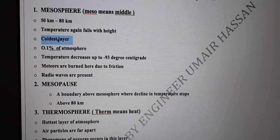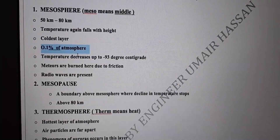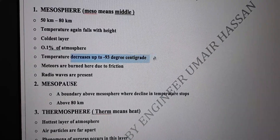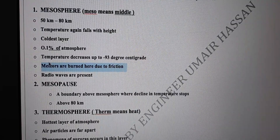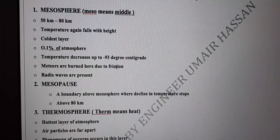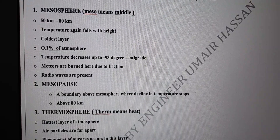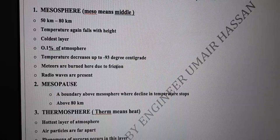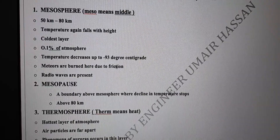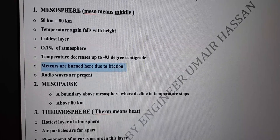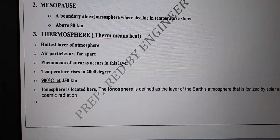In the mesosphere, temperature again falls with height, and it is the coldest layer of the atmosphere. Only 0.1 percent of the atmosphere is found in this layer. Temperature decreases down to minus 93 degrees centigrade. Meteors — also called shooting stars — are pieces of dust from space that burn up due to friction in this layer when they enter Earth's atmosphere. Radio waves are also present in the mesosphere.